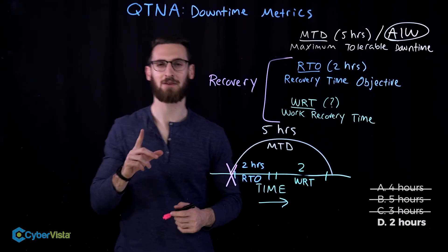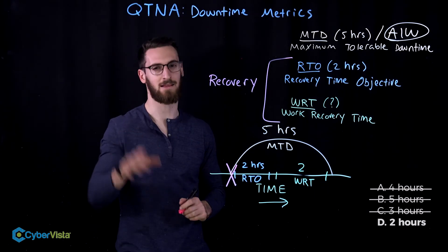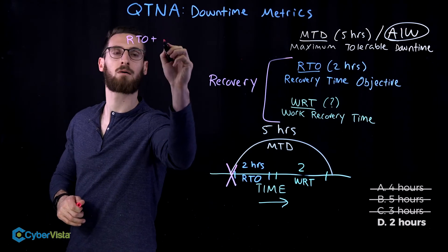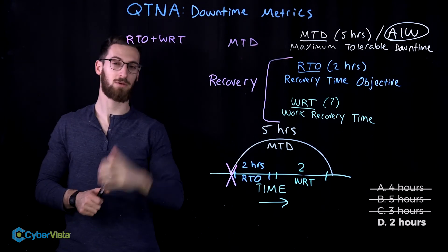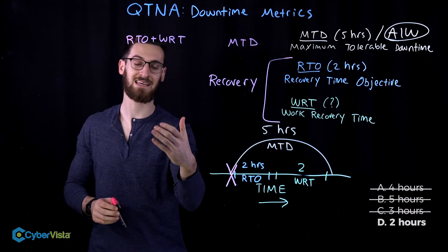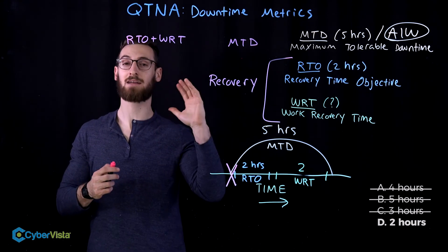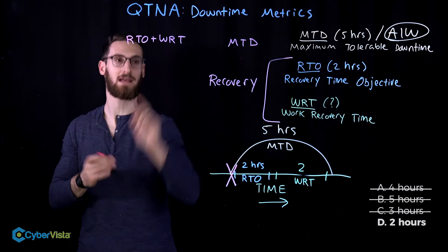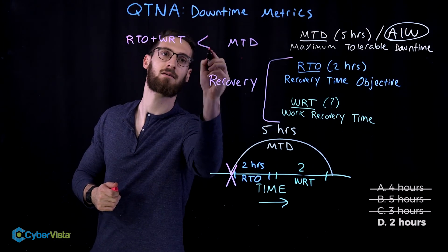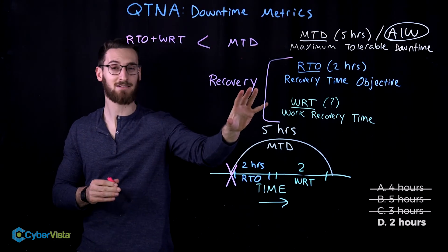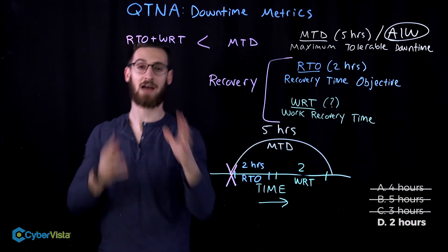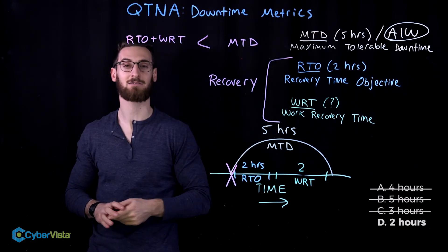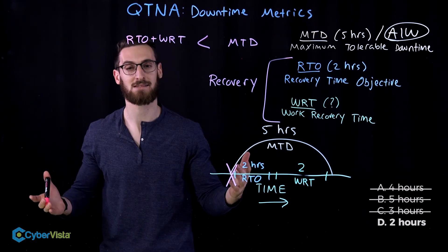Remember how I said there was one thing you had to remember from this video? There are actually two. Here's the second one: your RTO plus your WRT has to be less than your MTD. All this is saying is that there's a countdown clock in which you have to do your recovery. If you don't complete your recovery before the clock strikes zero, your business is going to die.